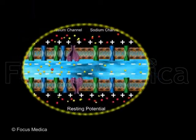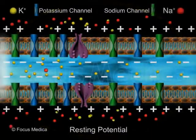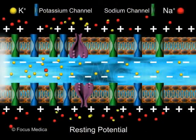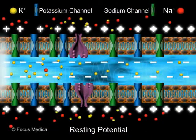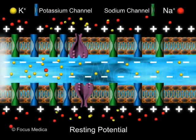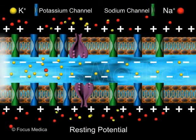Like other cell membranes, the membrane surrounding the neuron is also selectively permeable. When the nerve fiber is not conducting the impulse, that is, in the resting phase, it is normally polarized.